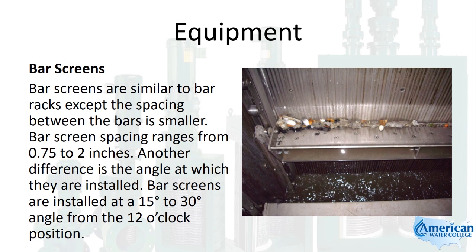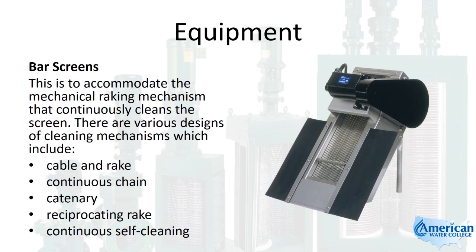Bar screens are similar to bar racks except the spacing between the bars is smaller, ranging from 0.75 to 2 inches. Bar screens are installed at a 15 to 30 degree angle from the 12 o'clock position to accommodate the mechanical raking mechanism that continuously cleans the screen. Various cleaning mechanism designs include cable and rake, continuous chain, catenary, reciprocating rake, and continuous self-cleaning systems.